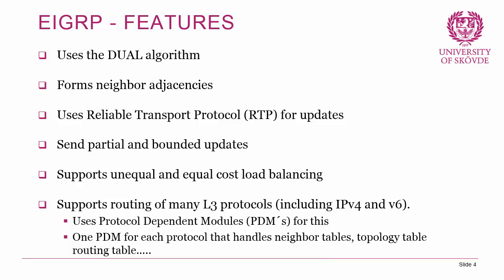EIGRP forms neighbor adjacencies by sending hello packets out all its interfaces and maintaining adjacencies with neighboring routers. This means it's aware of neighboring routers and tracks whether they're up and running — a requirement before sending routing updates. If an adjacency goes down, the local router will consider that router unavailable and recalculate the routing table.